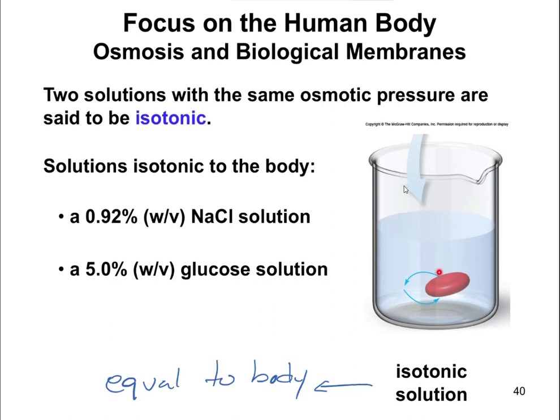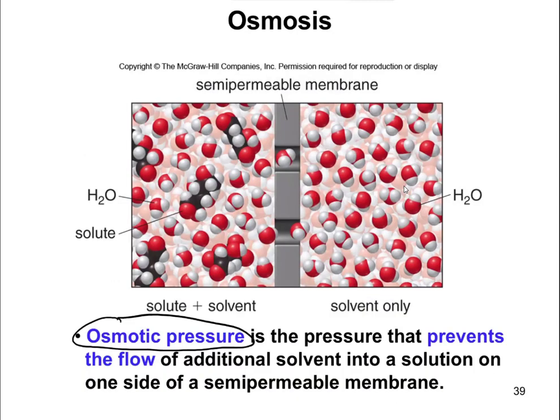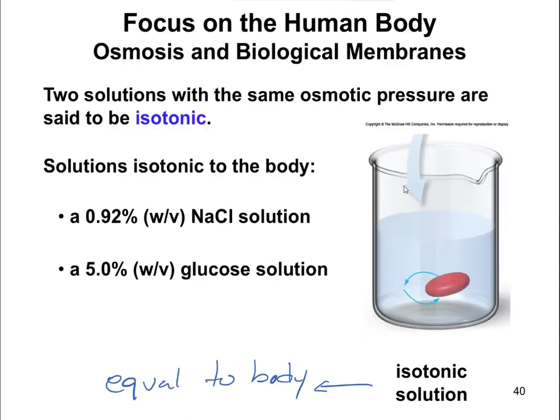These arrows shown here basically say you're going to have an equal amount of exchange of water going out of the cell and then some into the cell. The water is going to move the same from left to right as it does from right to left, because you have an equal amount of solute on both sides. That's an isotonic solution.